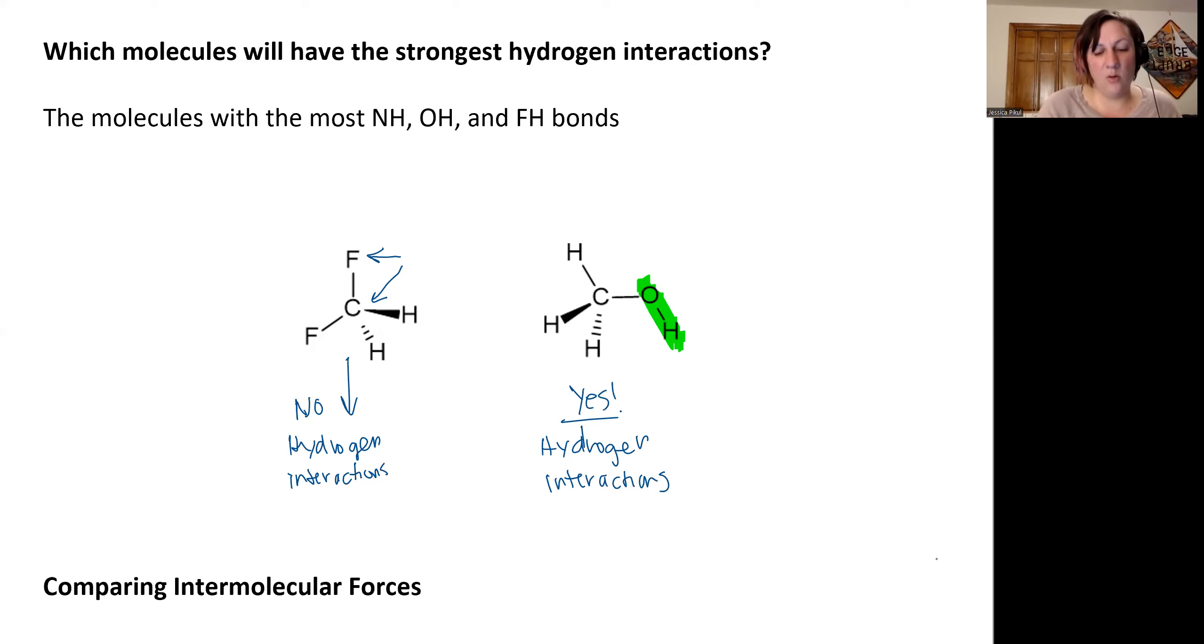We can imagine that the way this molecule would interact with another methanol molecule would be this hydrogen, which has the partial positive charge, would have some sort of interaction. Let's draw this a little differently than a bond, to an oxygen's lone pair on another methanol molecule.